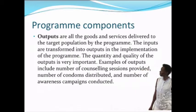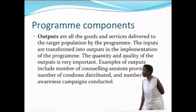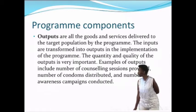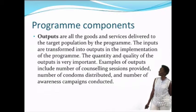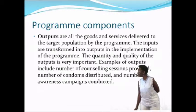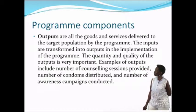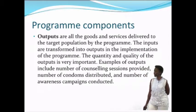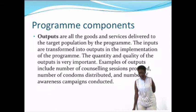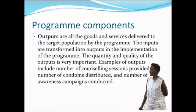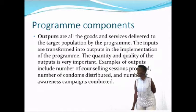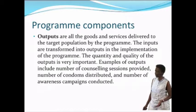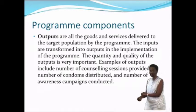The next component of a program is outputs — all goods or services delivered to the target group or population by the program. The inputs are transformed into outputs during the implementation of the program. It is very important to note that the quantity and quality of the outputs matter. Examples of outputs include counseling sessions, number of condoms distributed, and number of awareness campaigns conducted. Whatever you deliver during program implementation is regarded as an output, and it is counted.